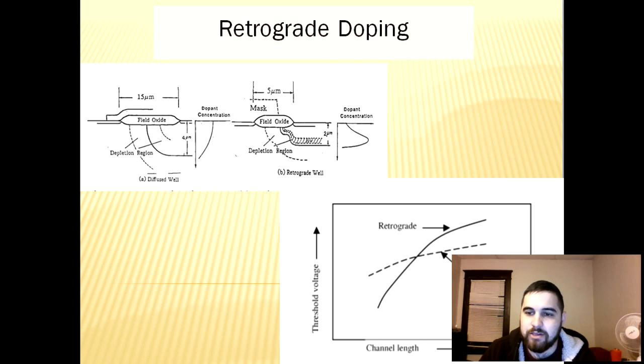Another technique used to reduce short channel effects in transistors is known as retrograde doping. Retrograde doping is a low-high channel doping technique that is used to improve the short channel effects found in small scale transistors. It is also done to increase surface channel mobility due to the doping gradient between surface channel and subsurface where the highly doped subsurface will act as a barrier against any punch through.